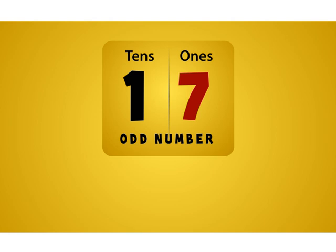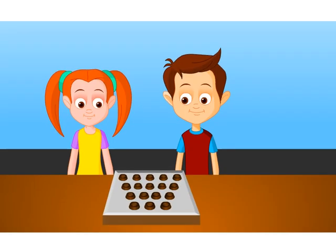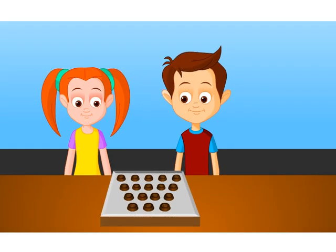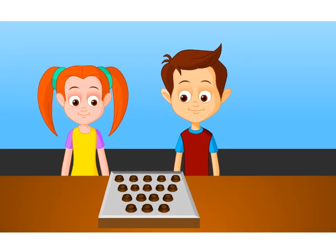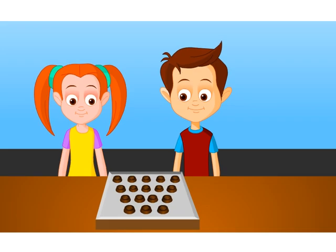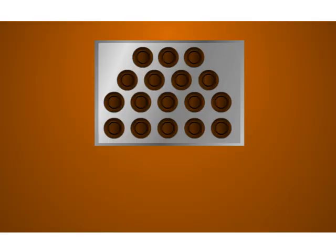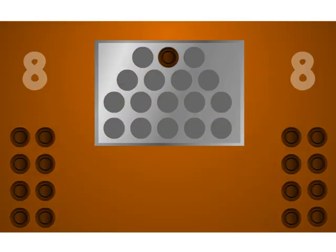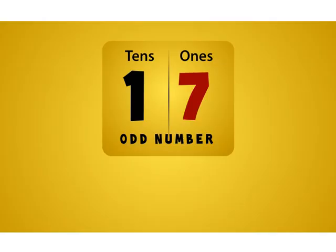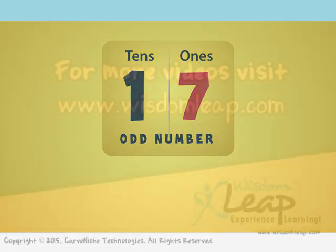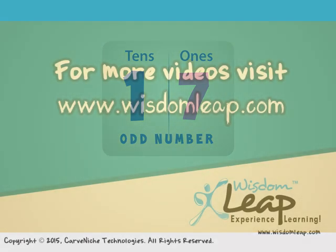Let us verify again by dividing these 17 chocolates between Jack and Tina. After dividing, we find that one chocolate is left over. So we are right — 17 is an odd number.